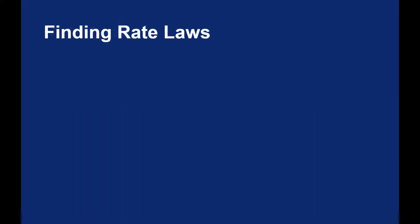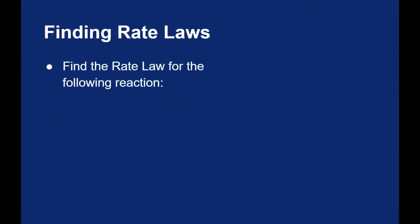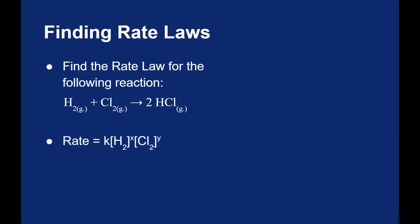Let me show how this works with a specific example: finding the rate law for hydrogen gas combining with chlorine gas to produce hydrogen chloride gas. The rate law will take the generic form: rate equals K times the concentration of hydrogen to some power times the concentration of chlorine to some power. The exponents have to be determined experimentally, so we need data.